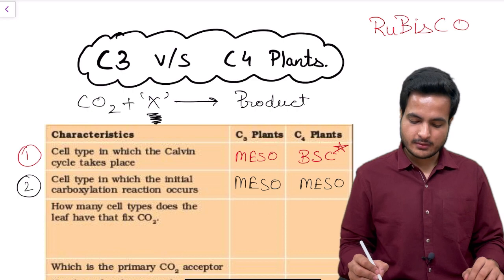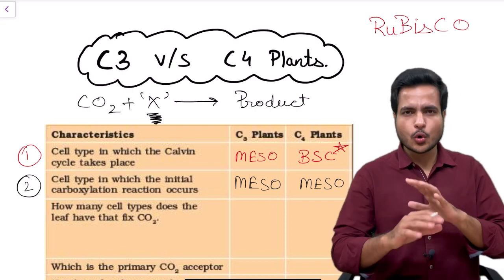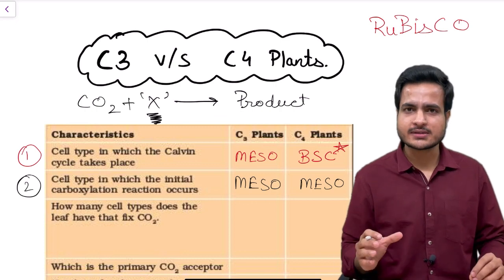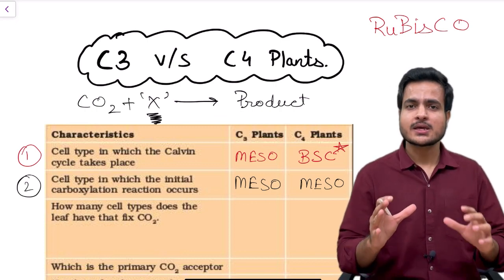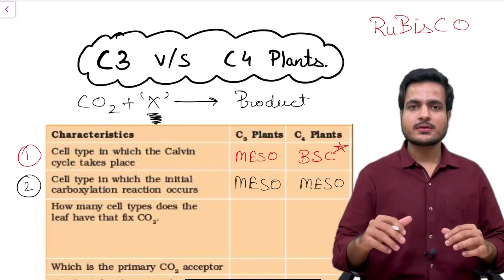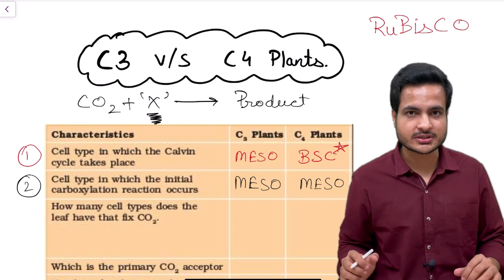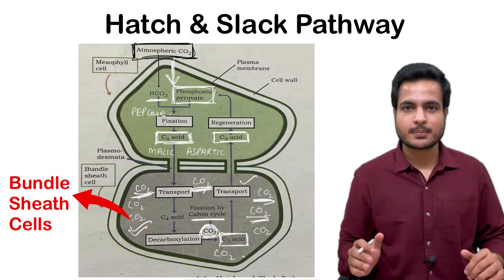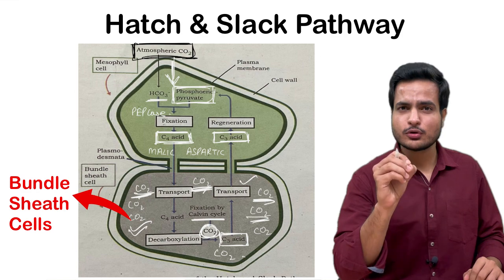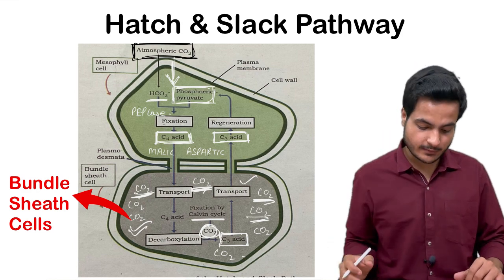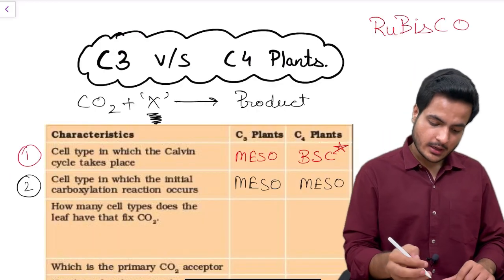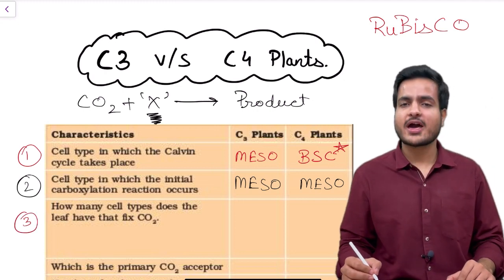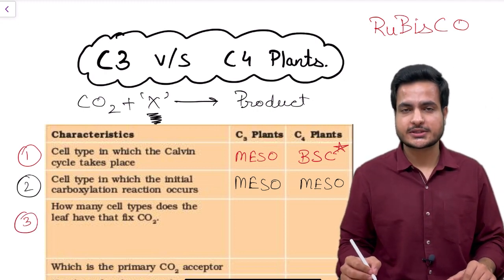In C4 plants, the initial carbon dioxide fixation and ultimately the Calvin cycle takes place through a pathway called the Hatch and Slack pathway. I have made a video on this pathway — you can watch that as well. The third point asks how many cell types the leaf has to fix carbon dioxide.